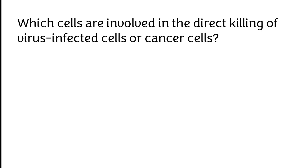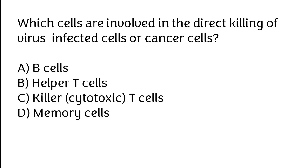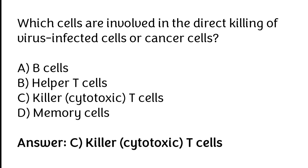Which cells are involved in the direct killing of virus-infected cells or cancer cells? B-cells, helper T-cells, killer cytotoxic T-cells, memory cells. The correct answer is option C. Killer cytotoxic T-cells are involved in the direct killing of virus-infected cells or cancer cells.